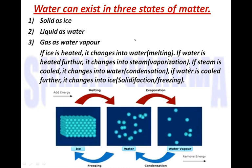The reverse is also possible. If steam is cooled — if it loses its energy — it changes into liquid state, that is water, and this process of conversion of gas to liquid is known as condensation. And if this water is further cooled, it changes into ice — from liquid state to solid state by losing energy. This process is known as freezing or solidification.